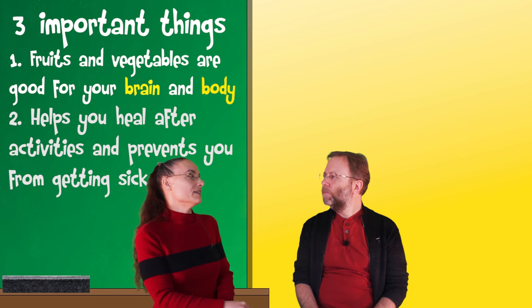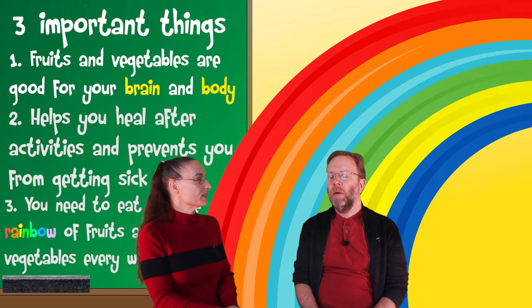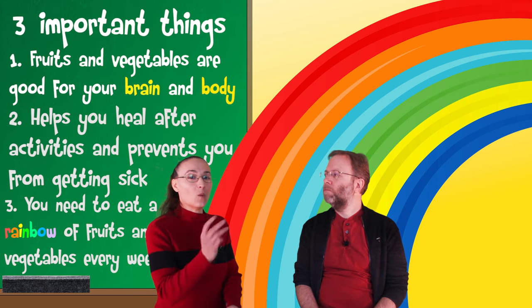So what's the third thing? The third thing is that you have to eat a whole rainbow of colors in order to get all the different fix-it workers. Oh, okay. Rainbow colors. That's easy enough. I think I can remember that. So what healthy fruit or vegetable are we going to talk about today, Zach?